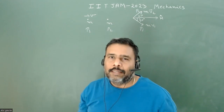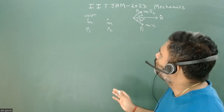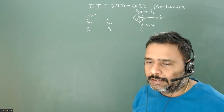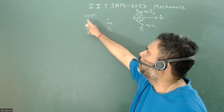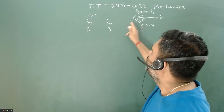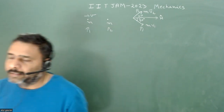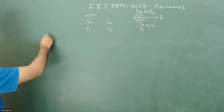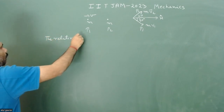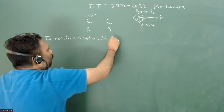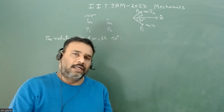We have to judge what this angle will be. This is an MSQ type problem, so more than one option can be correct. The first option: we have to analyze this angle. When both masses are the same, one mass is at rest, and another is moving with some velocity, then the relative angle between the two particles after collision is always 90 degrees. This is a theorem of elastic collision and you can find it in any good book.